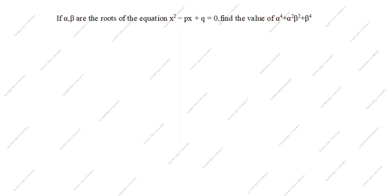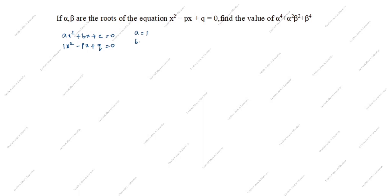The standard polynomial formula is ax² + bx + c = 0. The given question is x² - bx + q = 0. Looking at the coefficient of x²: a is not given, so we take a = 1. What is b? b is equal to -p. And c is equal to q.